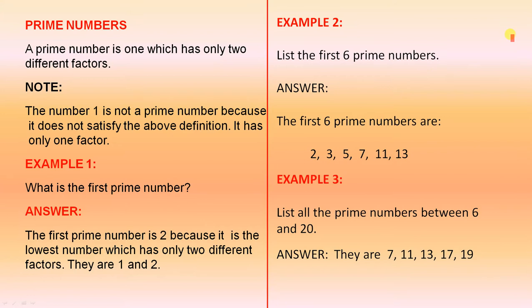Example 2: List the first six prime numbers. The first six prime numbers are shown here. Notice we start with two, and it's interesting to note that all the other prime numbers greater than two are all odd numbers.